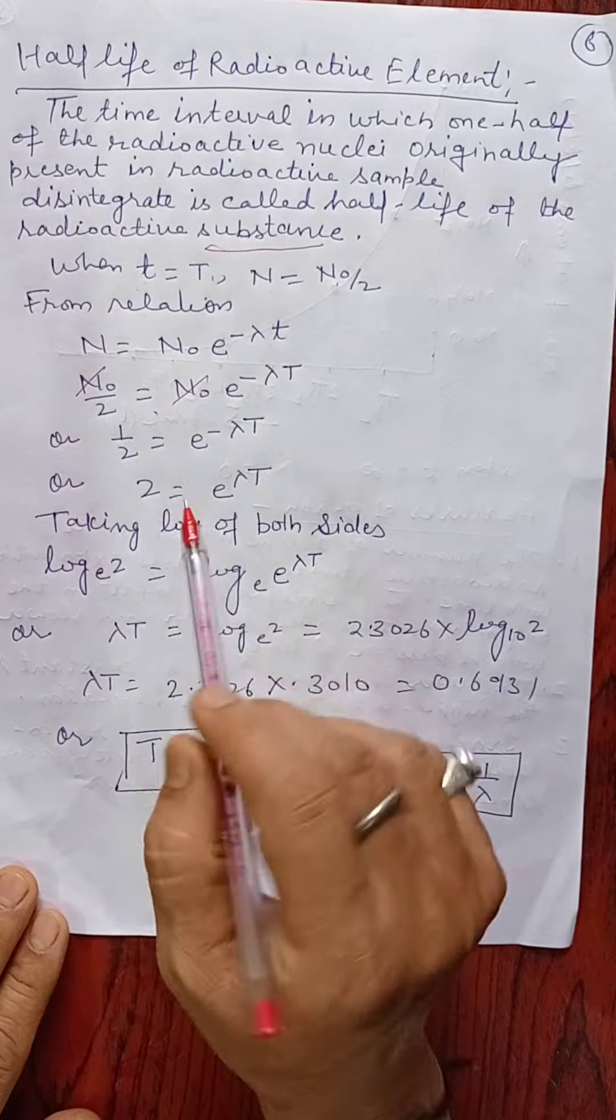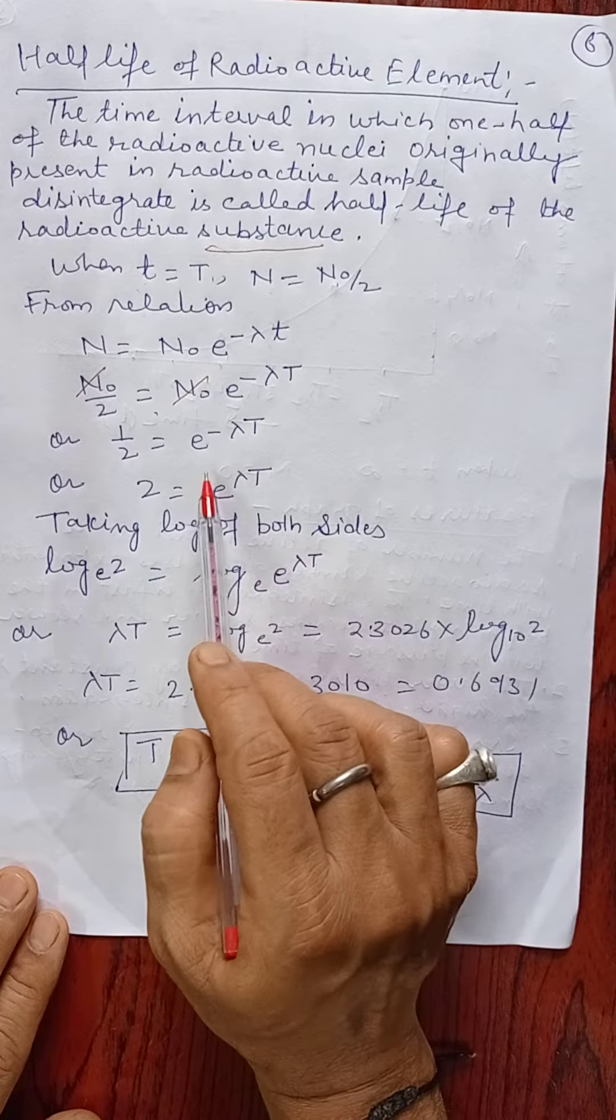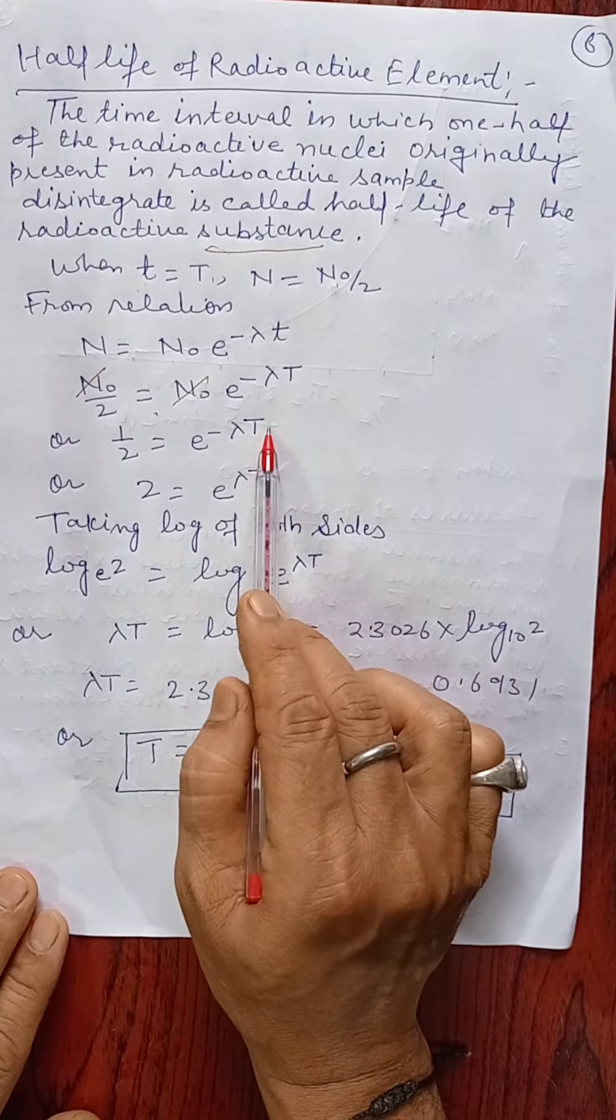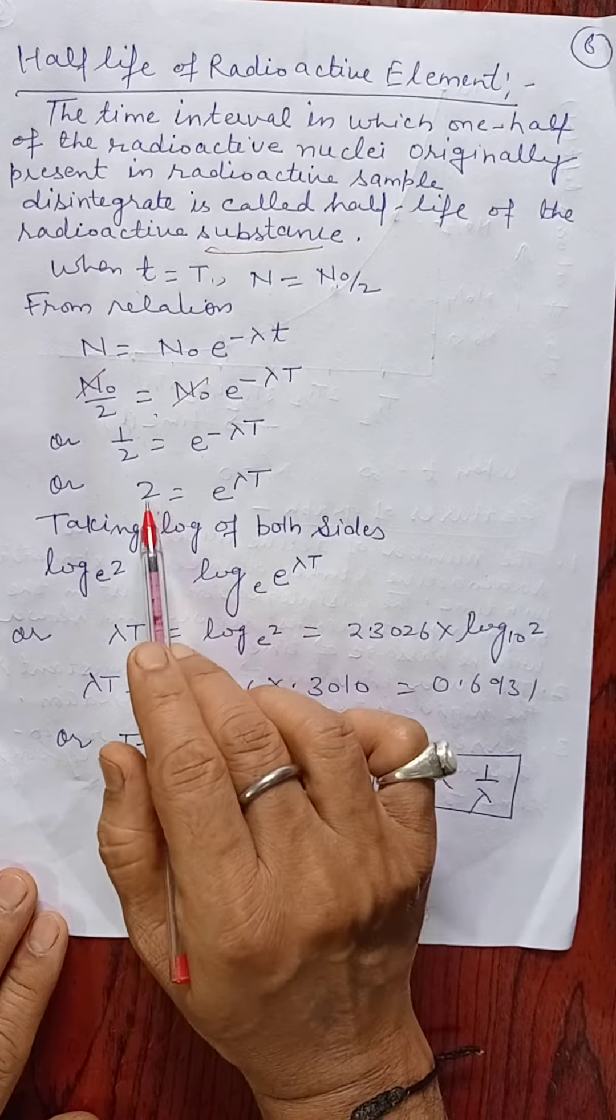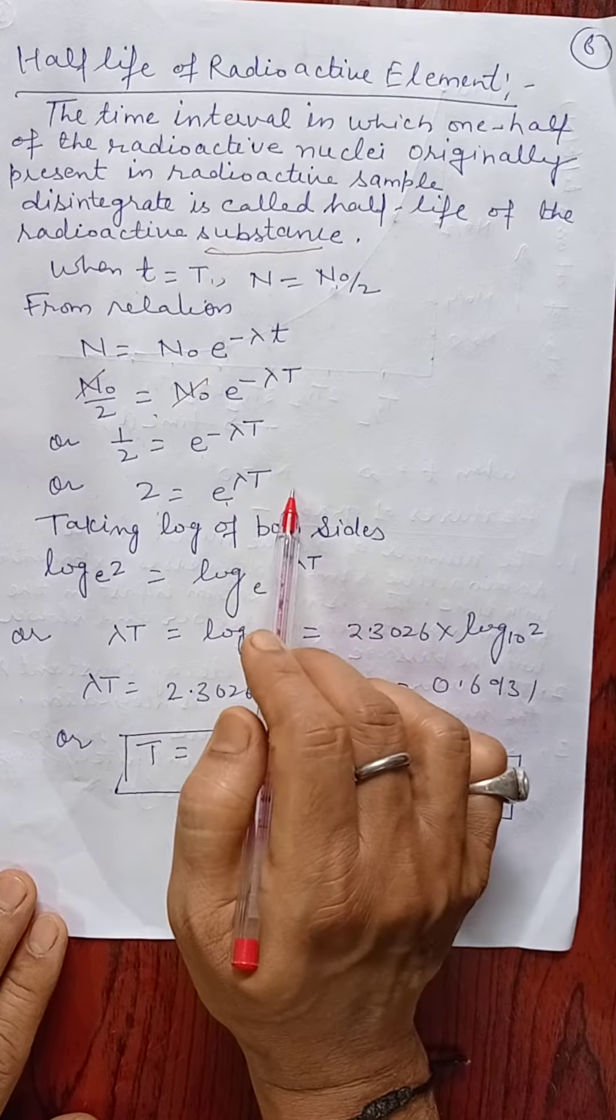So this N₀ cancels out, and we get 1 by 2 equals e raised to the power minus λT. Or this equation can be written as 2 equals e raised to the power λT.